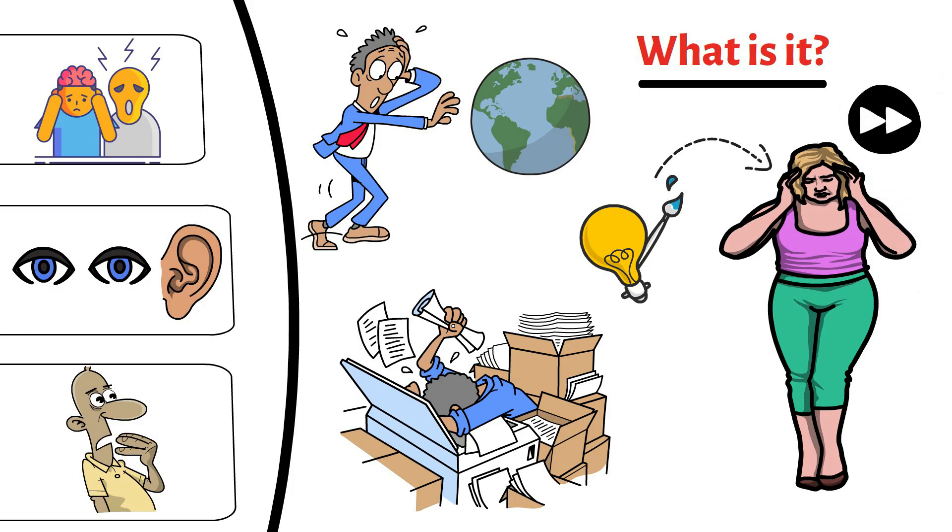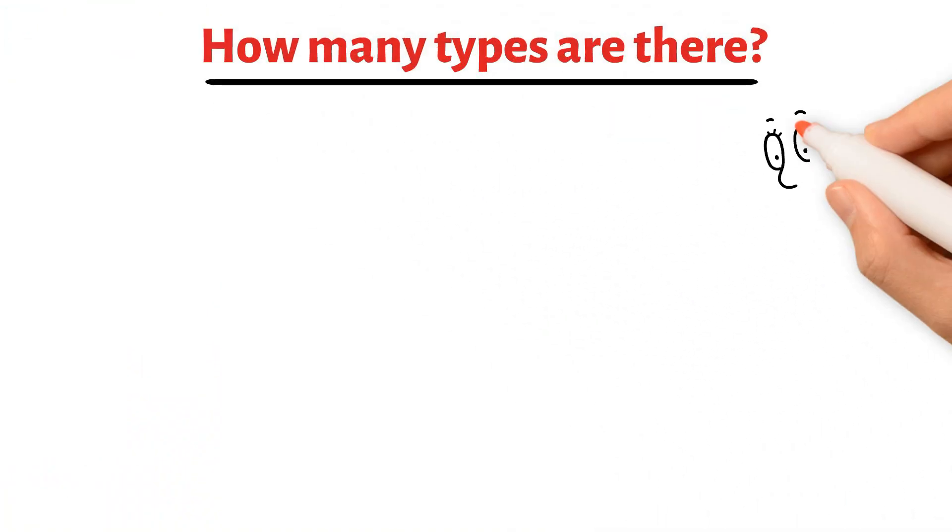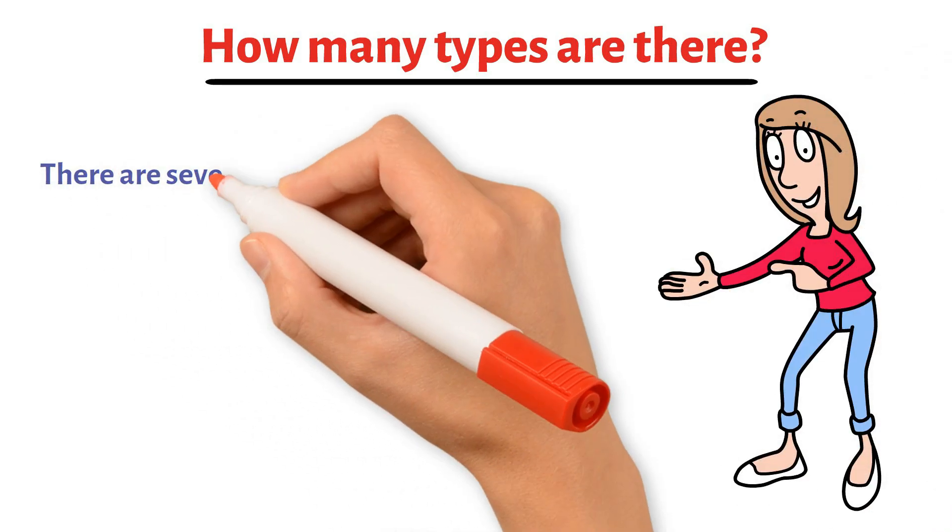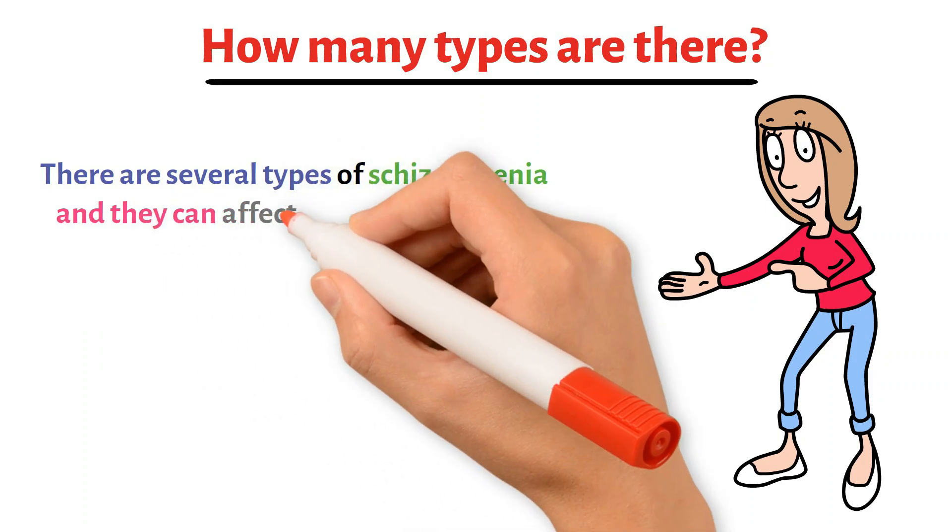Let's move on to the next point where we will learn about its types. Let's look at its types and understand them one by one. There are several types of schizophrenia, and they can affect people differently.